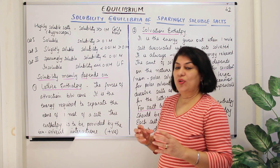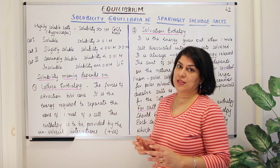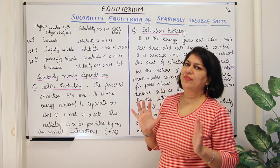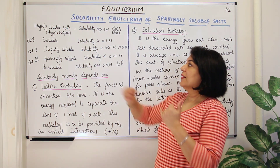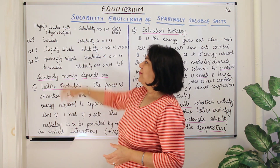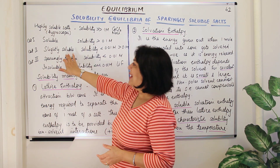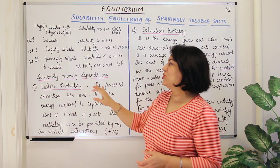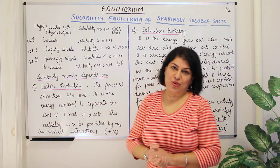On the basis of the solubility of salts, salts can be categorized into five categories: highly soluble or hygroscopic salts, soluble salts, slightly soluble salts, sparingly soluble salts, and insoluble salts.